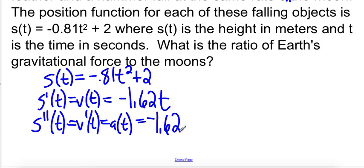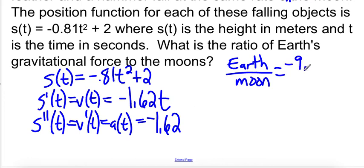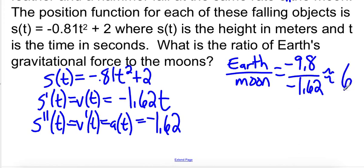So we want the ratio of Earth's gravitational force to the moon's. Acceleration due to gravity on Earth is negative 9.8 meters per second squared, and acceleration due to gravity on the moon is negative 1.62. Dividing 9.8 by 1.62 comes out to right around 6. So gravity on Earth is about 6 times stronger than the gravity on the moon. What a fascinating thing to know.